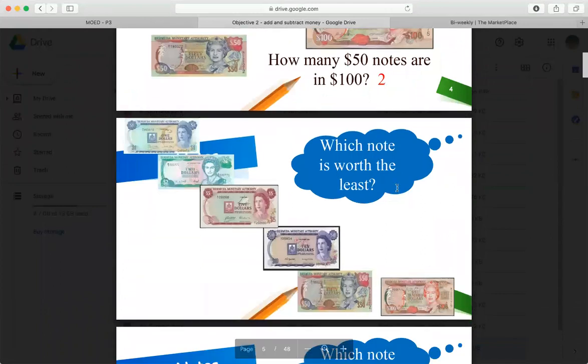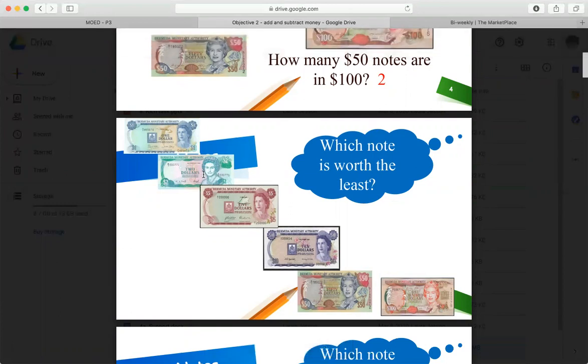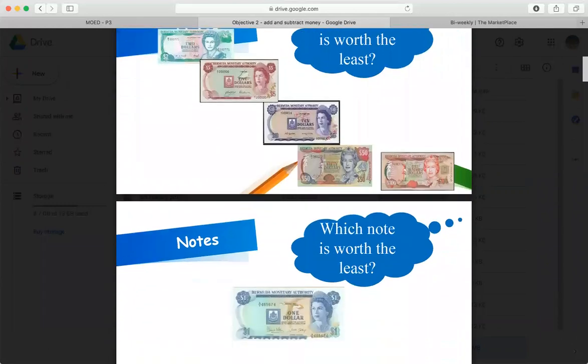All right, out of these, which is the least? $1 bill? Well, we have $1 coins, $2 bill, $5 bill, $10 bill, $50 bill, or a $100 bill? The dollar coin. Our dollar coin would be the least.